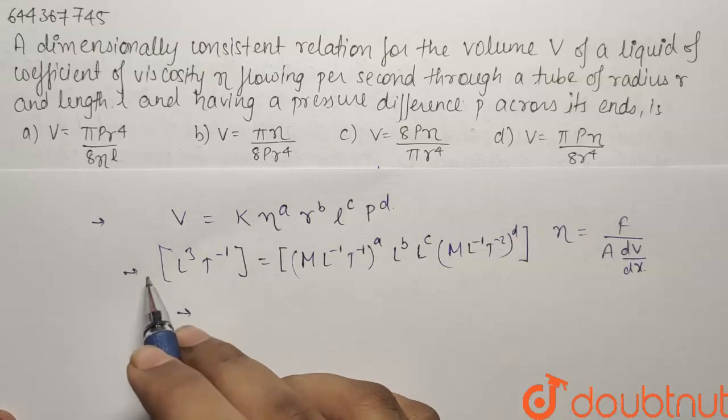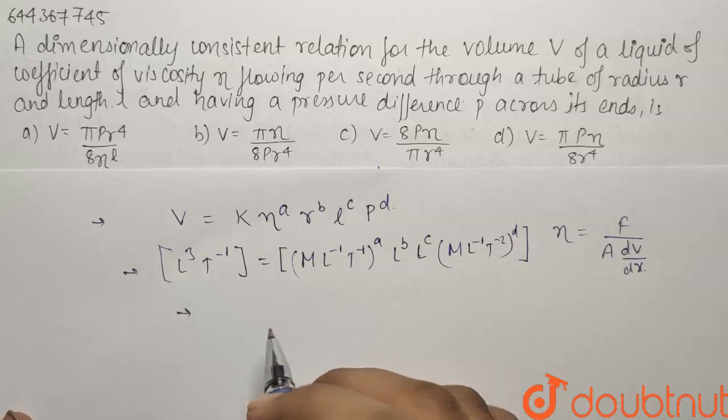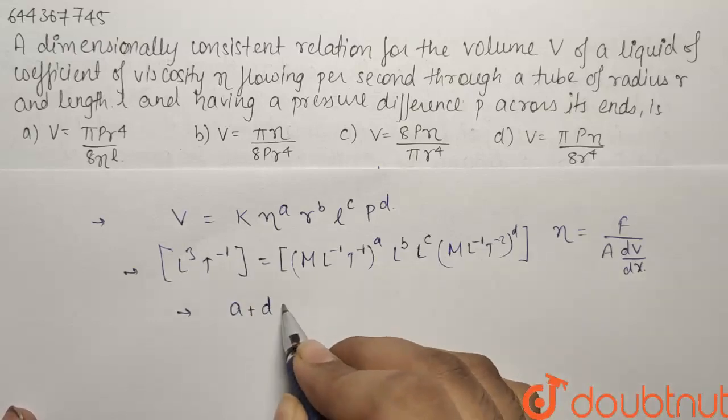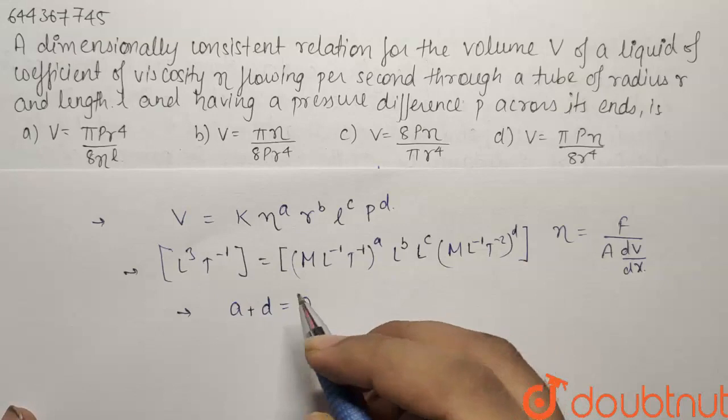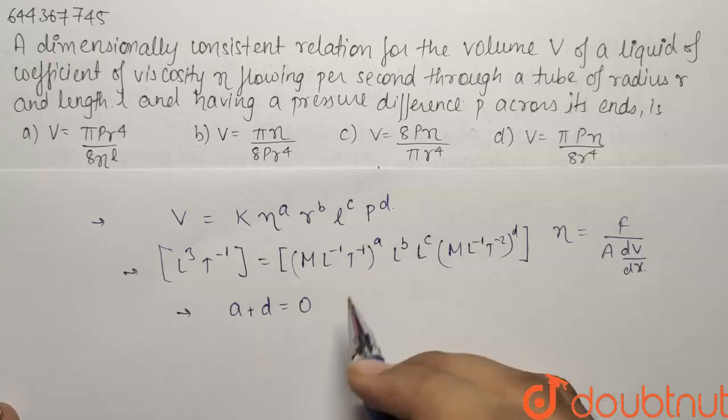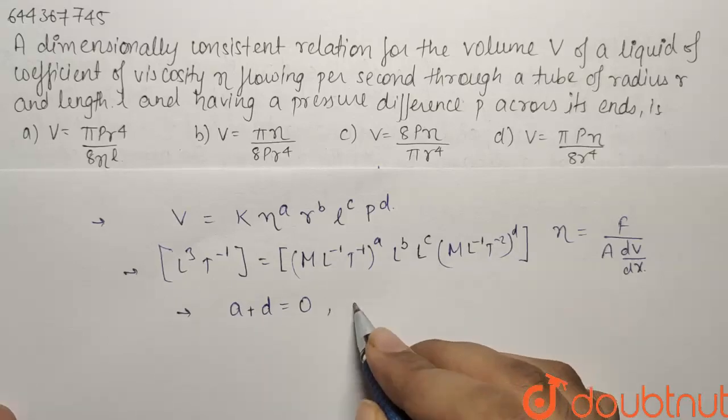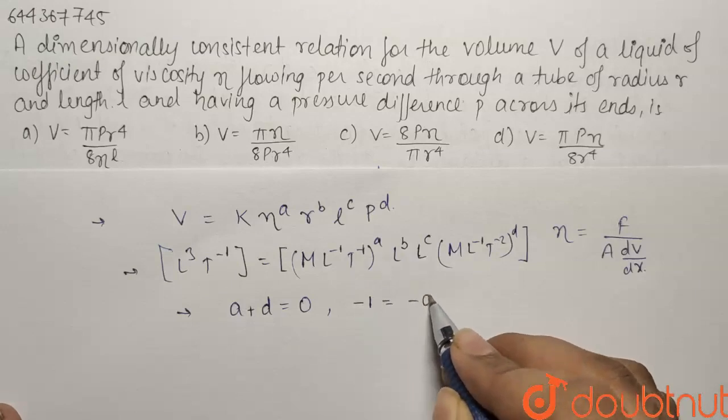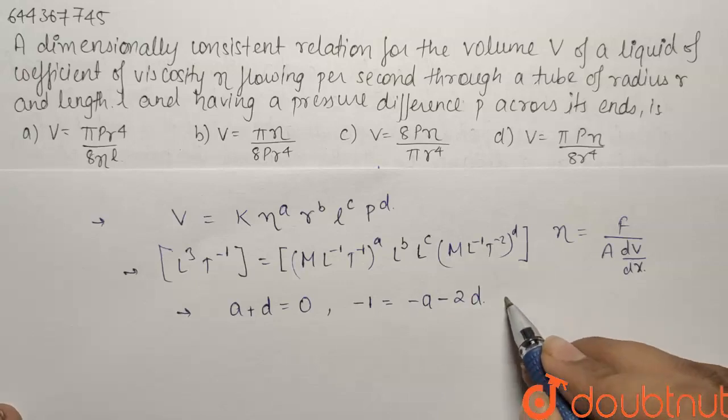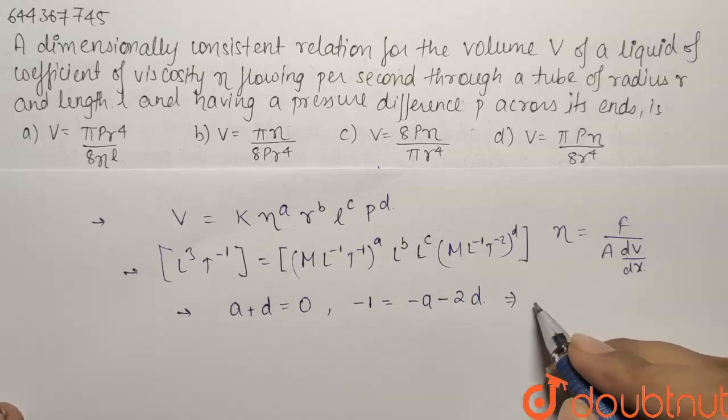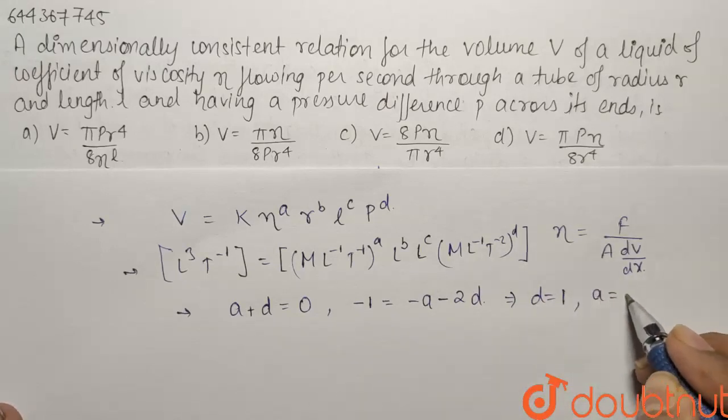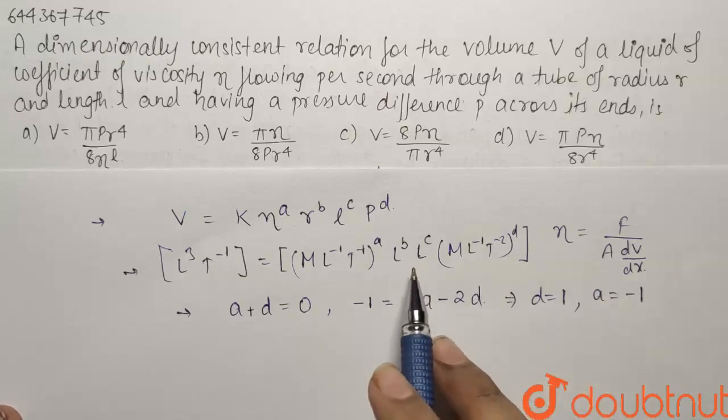So if I equate the term of mass, mass has coefficient 0 on this side. So here A plus D will be equal to 0 and this will be our first equation and if I have a look at the term of time. So in time T is minus 1 on LHS and it is equal to minus A minus 2 D. So if I solve both of these equation what I get? My term D comes out to be equals to 1 and similarly as D plus A is 0 so A will become minus 1. So we have found A and D now we have to find out B and C.